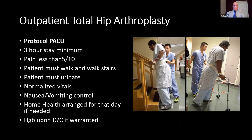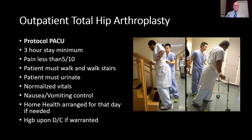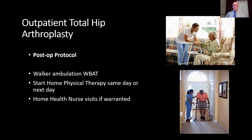In the PACU, patients typically stay a minimum of three hours. We want the pain to be less than five out of ten, and patients must walk at least 75 feet and be able to ambulate stairs. Patient must urinate. We obviously want normalized vitals and nausea and vomiting to be controlled. Home health can be arranged for that day if needed, and hemoglobin may need to be checked. Post-operatively, I typically use walker ambulation with weight-bearing as tolerated. The walker tends to be more stable post-operatively compared to crutches. We'll also start home physical therapy either the same day or the next day, arranged ahead of time, and home health nurse visits if warranted.